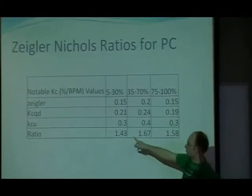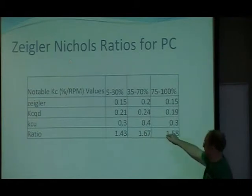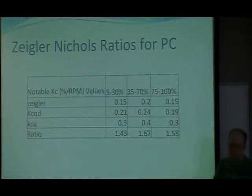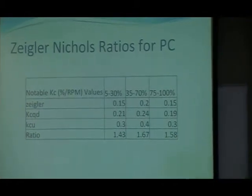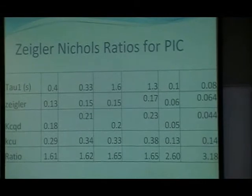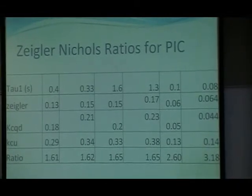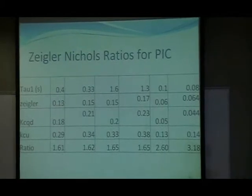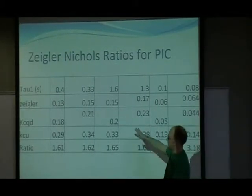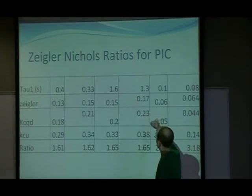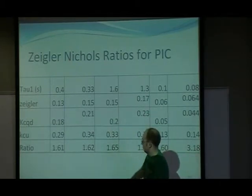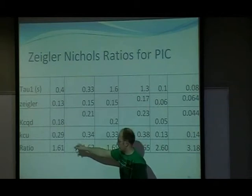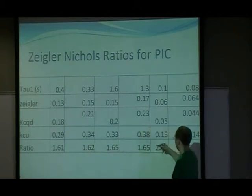Here are the values for KC for each Ziegler, the normal KC quarter decay, and the KCU ratio. I've been told that these need to be one over this, one over that, and one over that. And these are the Ziegler-Nichols ratios for the proportional integral controllers — similar things. These probably should be averaged together, and these should be one over each of these values.